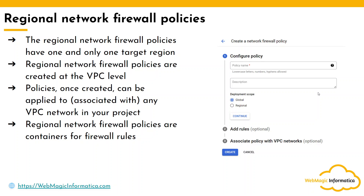So this is what the firewall policy is trying to solve — instead of managing rules individually in every network, you create them as a container. You can then associate at the folder or organization node if you are using the hierarchical firewall policy, or create firewall policies at the project level and decide whether to associate them to the entire globe for particular or multiple VPCs, or restrict them to a particular region for multiple VPCs. That's it for this video, thank you.